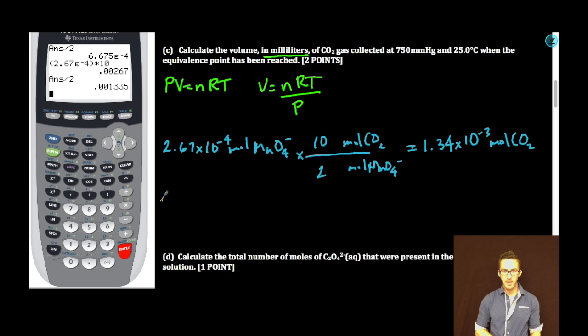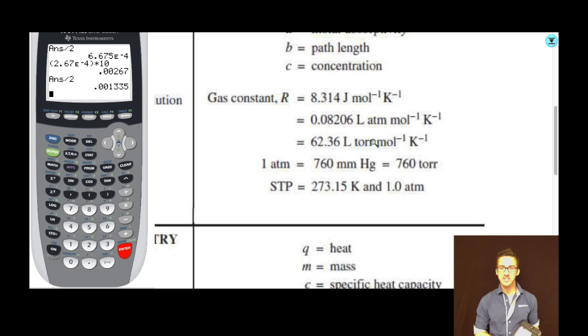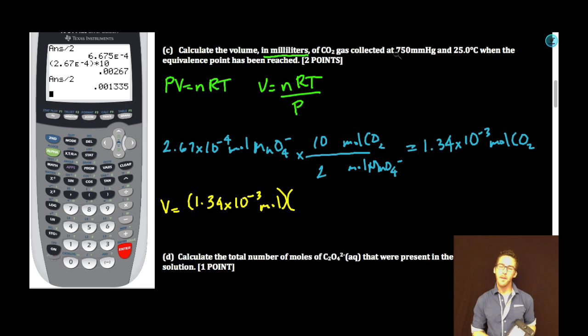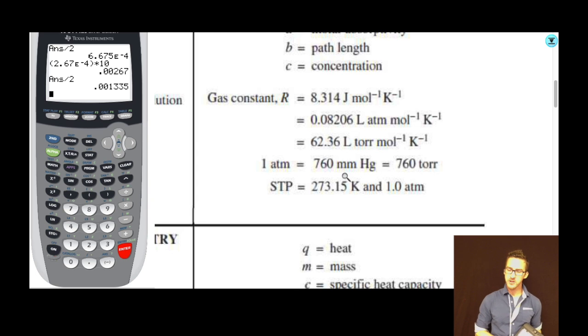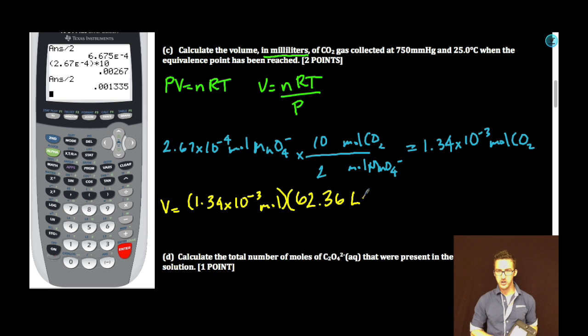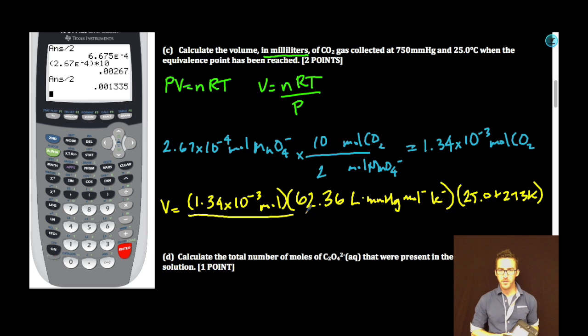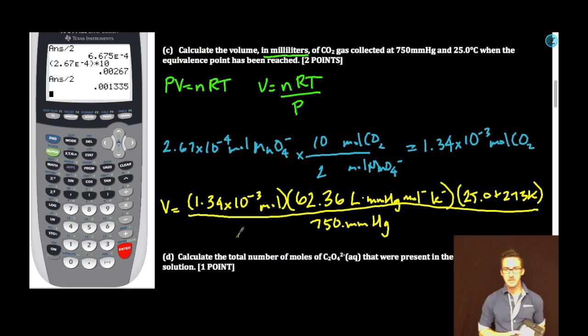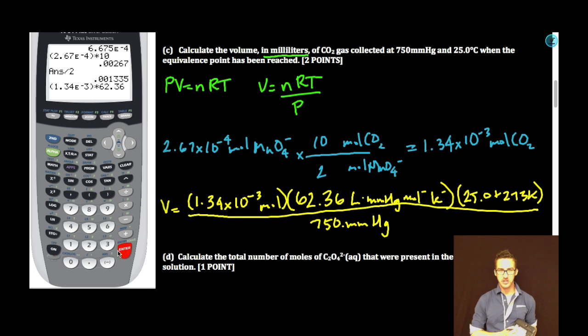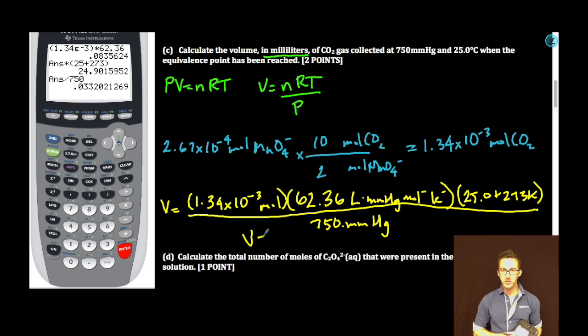Let's just plug this into our PV=nRT equation. Our number of moles, 1.34 times 10 to the minus 3. Which gas constant am I going to use? Time for the formula chart. As you scan your gas constants, you're given several of them. You have a couple of different options. I just like to look at the pressure unit and then choose the R value that matches. Remember that millimeters mercury and torr are equivalent. So here's the gas constant I'll be using. 62.36 liters times millimeters mercury per mole kelvin. Don't forget your temperature needs to be in kelvin. You add 273. So 25.0 plus 273, all of that over my pressure, 750 millimeters mercury. Calculator time. Our volume in liters, 0.0332 liters.